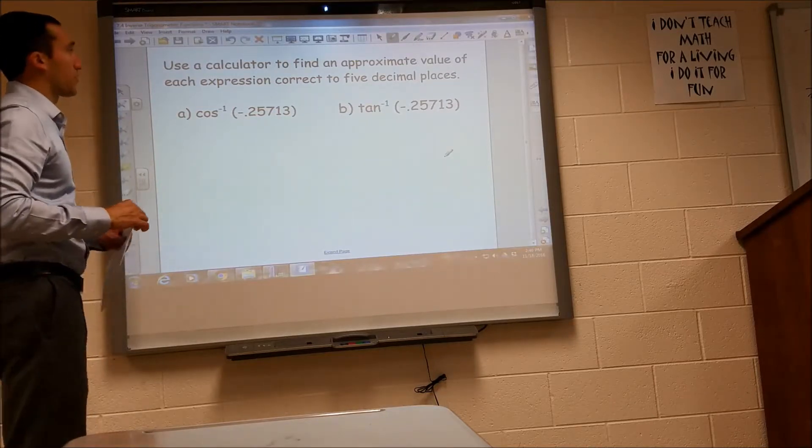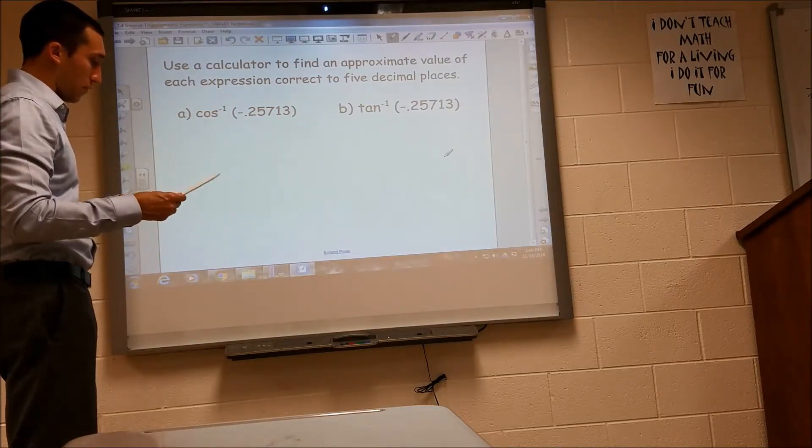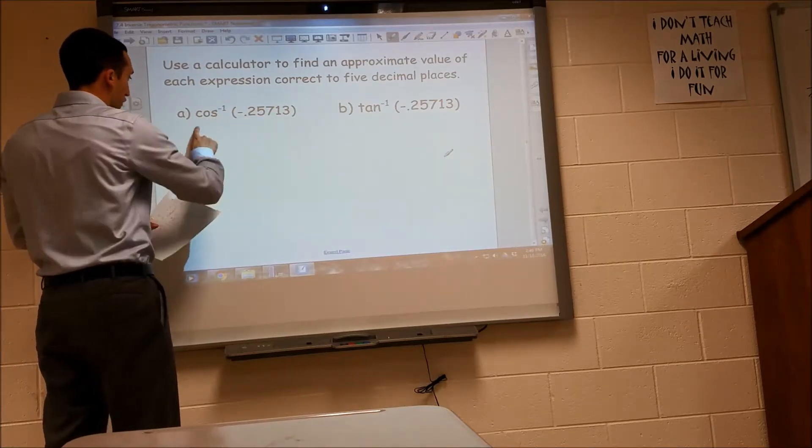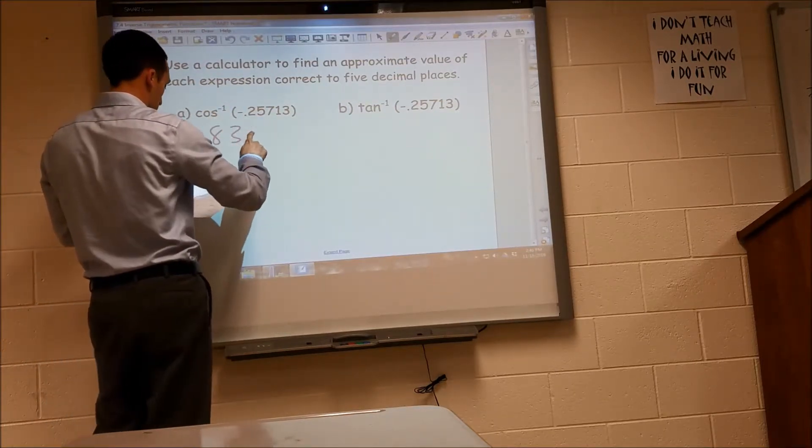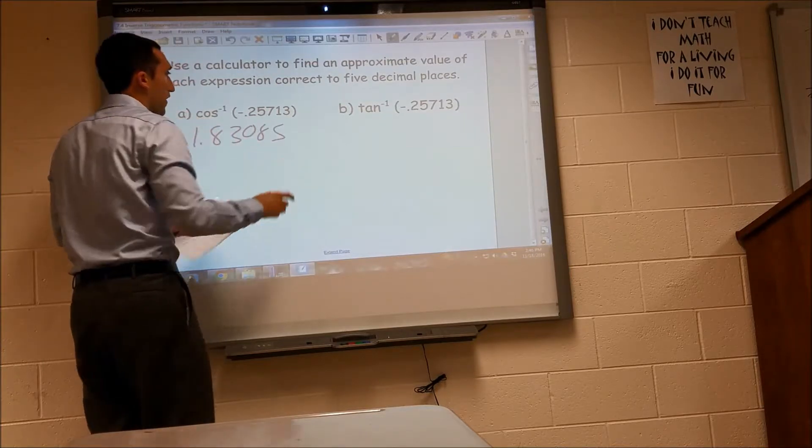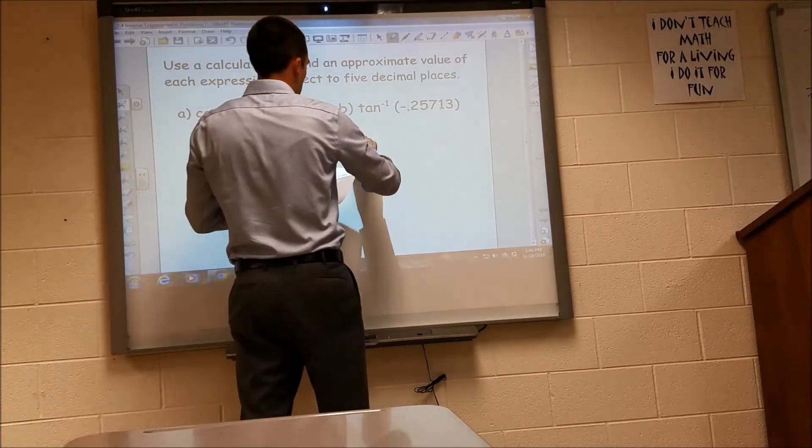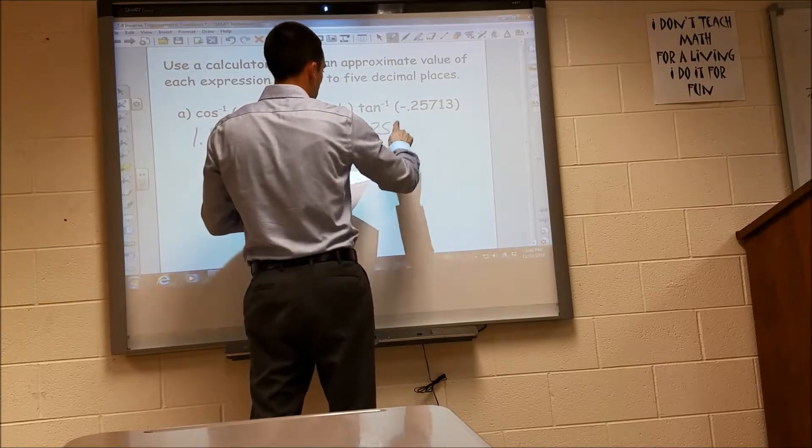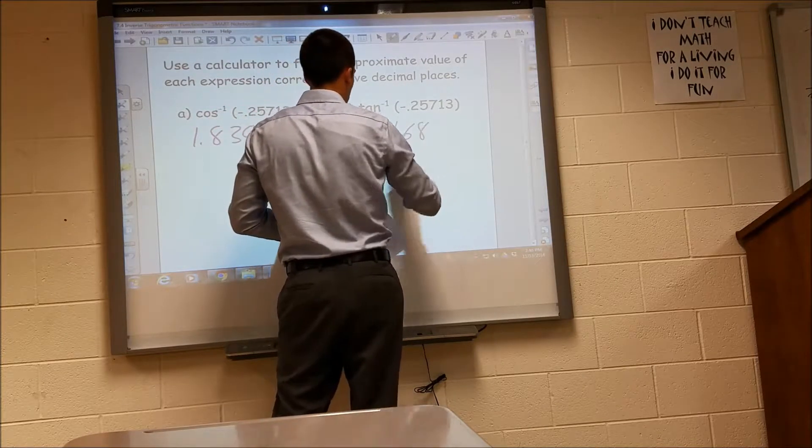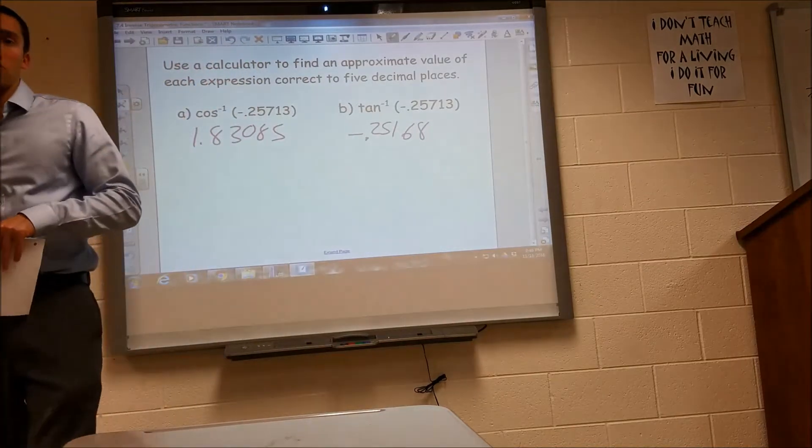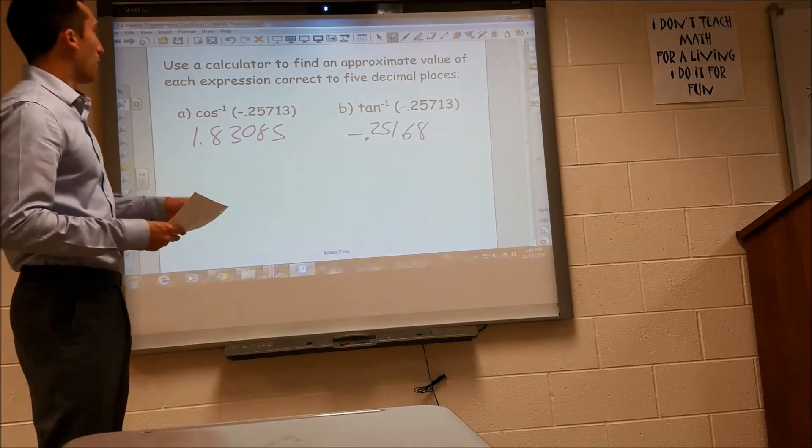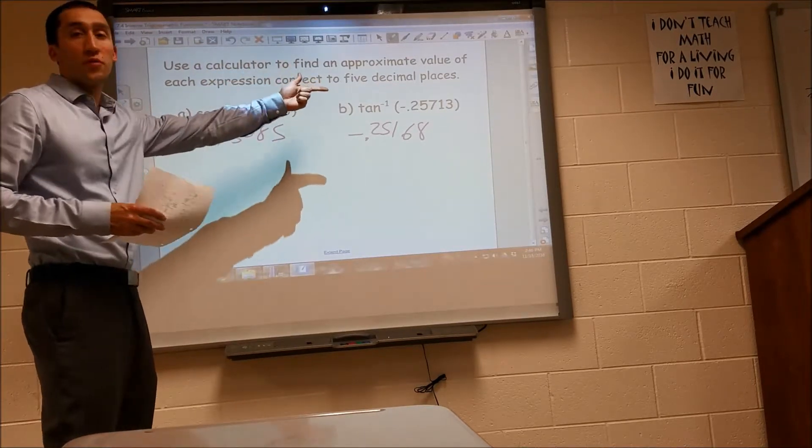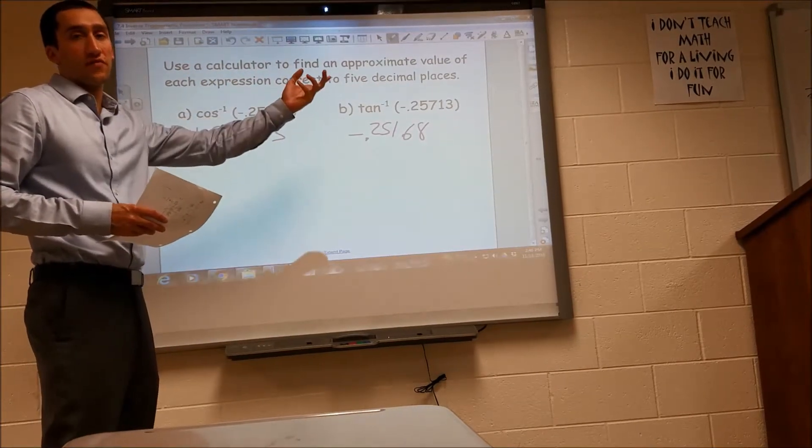So allowing our calculator to do some work for us, we come up with inverse cosine of this value. It gives us 1.83085. And the inverse tangent of this is negative 0.25168. So you can go ahead and try those examples like that. If they're not numbers we know exactly, then your calculator is going to have to do it.